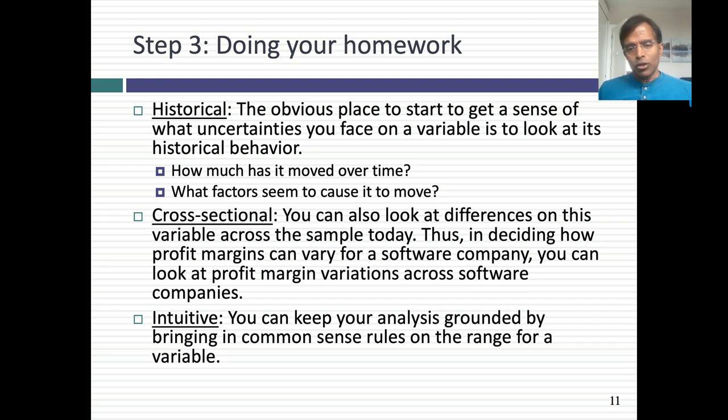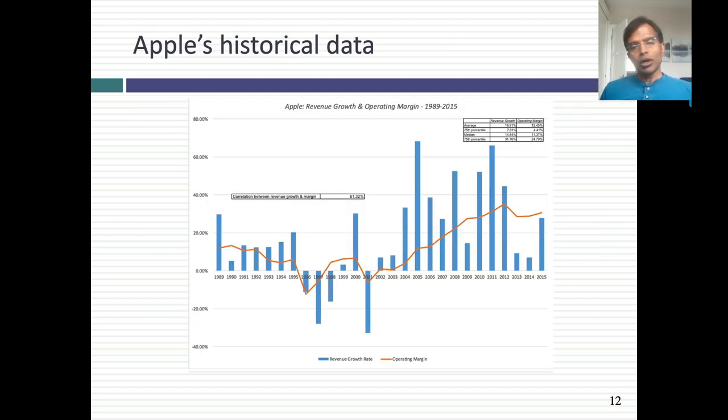It turns out that revenue growth and margins have a big effect on value. Sales to capital doesn't seem to have much of an effect, and cost to capital has a very marginal impact. So based on these what-ifs, I decided to focus just on revenue growth and margins. To model revenue growth and to get distributions for revenue growth and margins, I'm going to start by doing my homework. I can look at historical data on Apple's margins over time, its revenue growth over time. Second, I'm going to look at differences across companies on these variables. Along the way, I can't suspend intuition and common sense - margins can't exceed 100%, market share cannot exceed 100%.